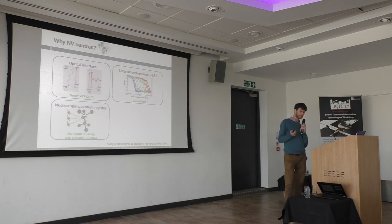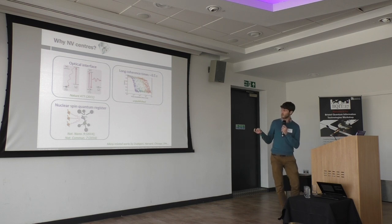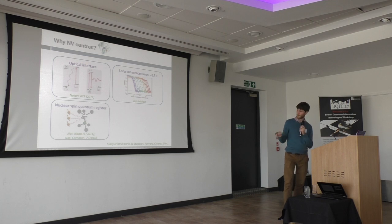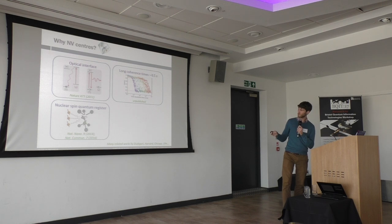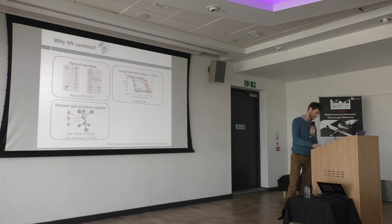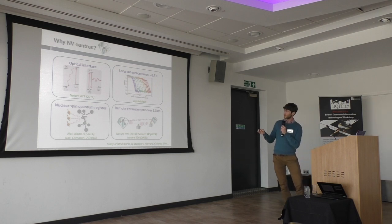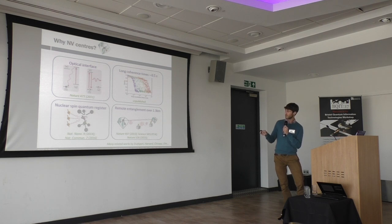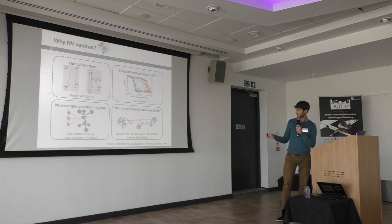The nice thing about the nitrogen vacancy centre as a system is you don't just get the spin qubit of the NV centre, because diamond naturally places carbon-13 spins nearby, and these couple to your nitrogen vacancy centre. We can indirectly control these spins using the NV centre, so essentially for free we get a set of robust quantum memories. Furthermore, we can create entanglement between distant nitrogen vacancy centres using similar optical methods.